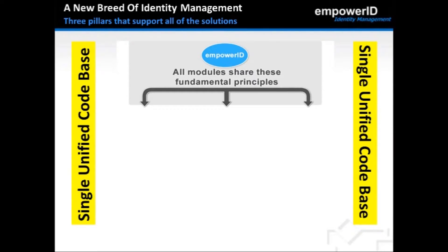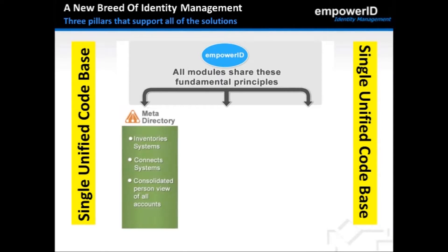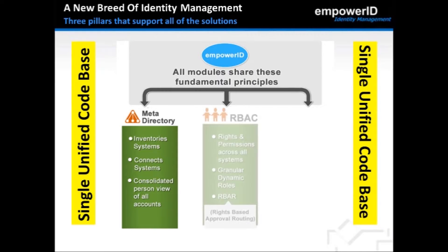The Enterprise EmpowerID system was designed and built from a single, unified code base with all modules sharing three foundational principles. The first is our Enterprise Meta Directory, which connects to and inventories external systems we manage and provides a consolidated, person-centric view of all accounts. Next is our roles-based access control, or RBAC engine, which provides the security architecture for EmpowerID — enabling the creation and maintenance of granular and dynamic roles for managing rights and permissions across all managed systems.